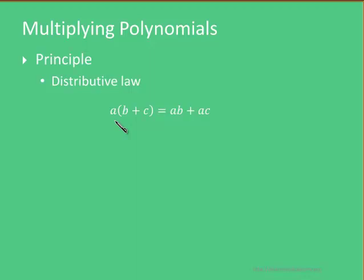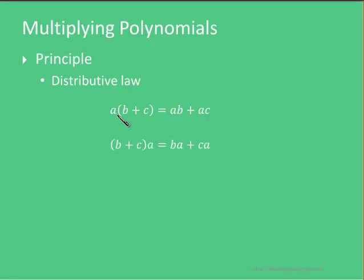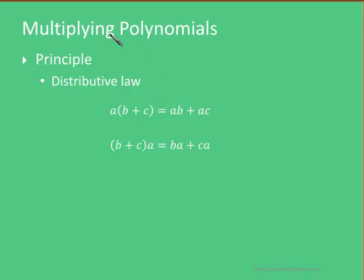Let's do it again, only this time using variables. So we have a times the expression in parentheses, b plus c. This gives us a times b plus a times c. Let's do this very same problem but slightly differently. Instead of having a times this expression we have this expression times a, which is the same thing because multiplication is commutative — 5 times 3 is the same as 3 times 5. So this becomes b times a plus c times a. This approach is what we are going to apply as we multiply polynomials.